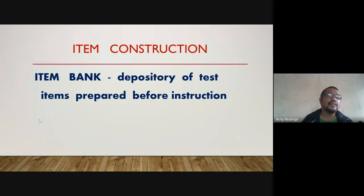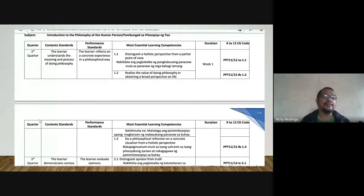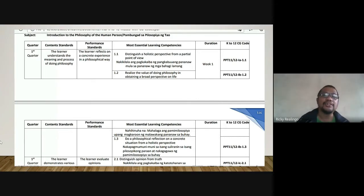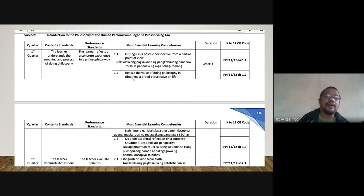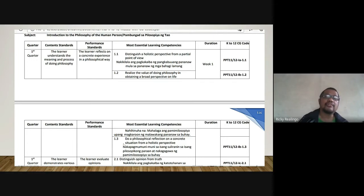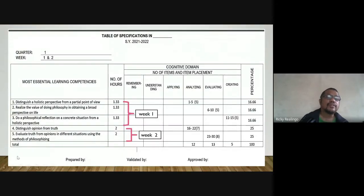In item construction, we prepare a table of specification and look at the MELC. I have here an example for the subject Introduction to Philosophy of Human Person. The most essential learning competencies for week one are: first, distinguish a holistic perspective from a partial point of view; second, realize the value of doing philosophy in obtaining a broad perspective on life; and third, do a philosophical reflection on a concrete situation from a holistic perspective. So there are three MELCs for week one.